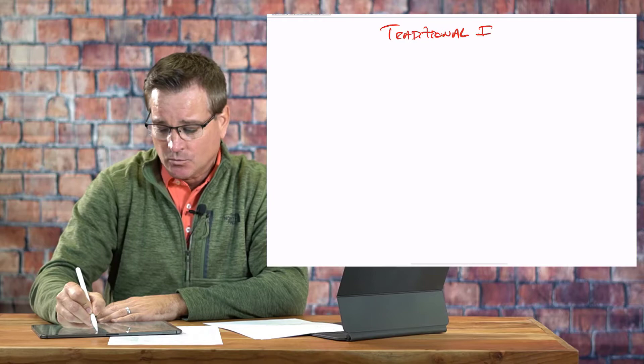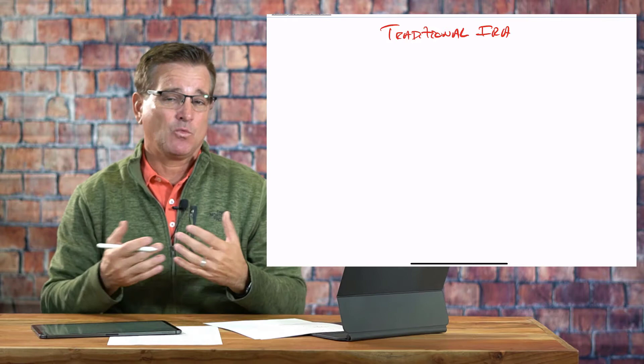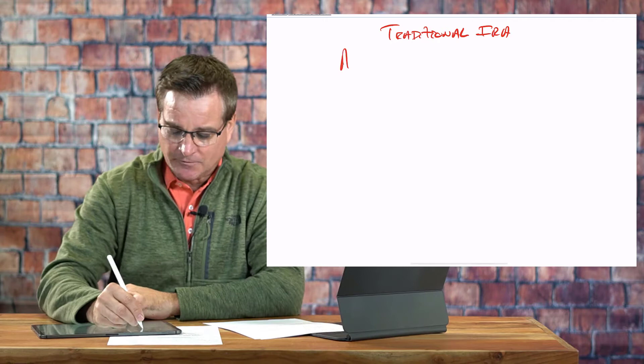On our whiteboard topic today, we're talking about when a surviving spouse inherits a traditional IRA from a deceased spouse. With a traditional IRA, we always have to talk about options and tax implications for a surviving spouse, and when do they have to take distributions. So we're going to make a couple of assumptions.